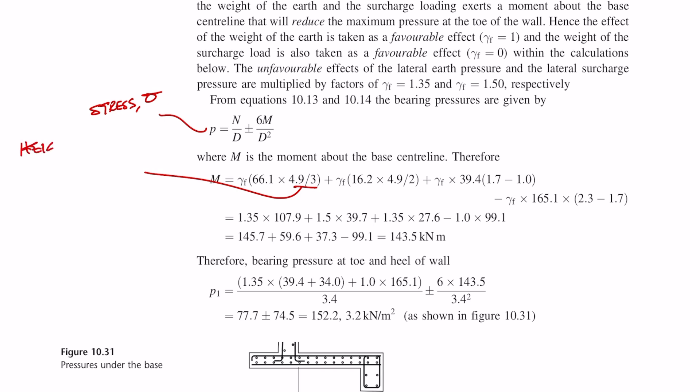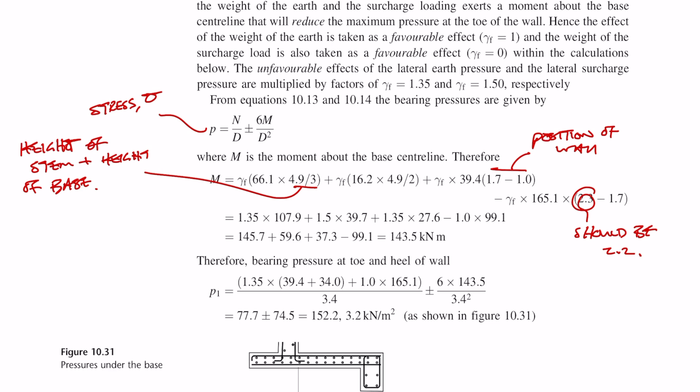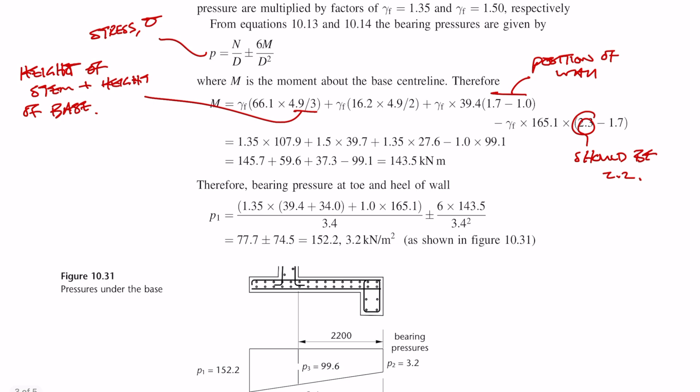The lever arm between the centerline of the base and the stem is 1.7 minus 1, then we multiply it by the vertical force or vertical weight of the stem. We need to work out the bending moments due to the vertical weight of the soil but this acts in the opposite direction so we're giving it a negative sign. The lever arm of the weight of the soil is basically the center of mass to the center of the base. This should be 2.2 not 2.3 minus 1.7. The difference is pretty negligible so we'll continue with the numbers in the textbook. Then we apply all the correct safety factors: 1.35 for dead, 1.5 for live, and also 1 if it's a favorable effect. In this case because we want the largest bending moment we're putting a factor of 1 against the negative bending moment.